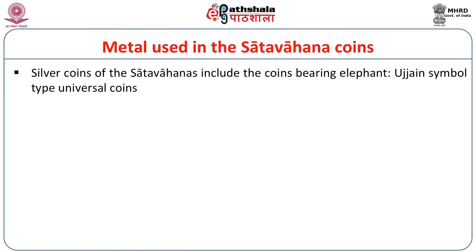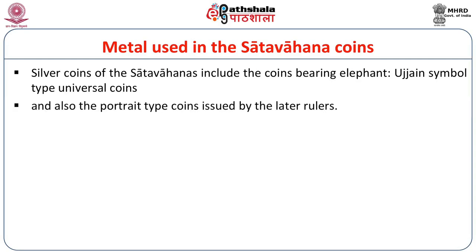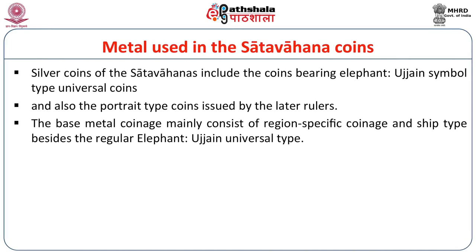As far as metals are concerned, silver coins of the Satavahanas include the coins bearing the elephant and Ujjain symbol — the universal or imperial type. The portrait type coins can also be included in this imperial category, as they bear portraits of the Satavahana rulers and were also issued in silver. The base metal coinage mainly consists of region-specific coinage, along with ship type coins which the Satavahanas issued for the eastern territory.